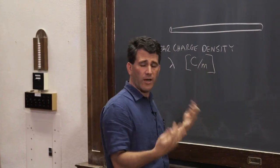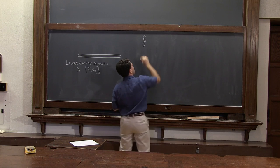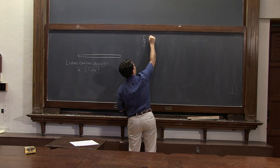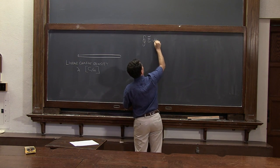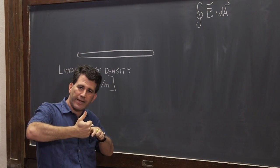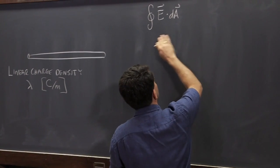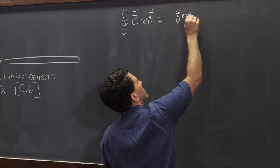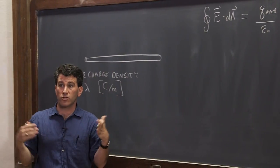What you learned when talking about Gauss's law is this idea that I can have some closed surface, and over that surface I'm going to perform an integral of the electric field at whatever little spot I am on the surface, dotted with a little piece of surface area, and the vectorial direction is given by a unit vector normal to the surface. Gauss's law says this integral over the whole closed surface equals the enclosed charge divided by epsilon naught.